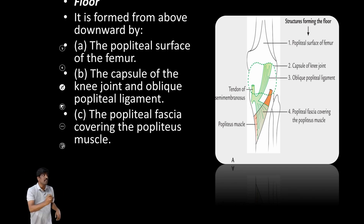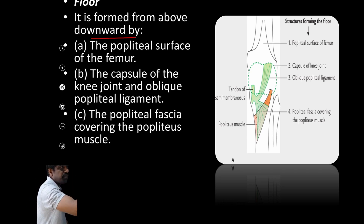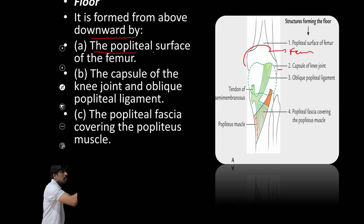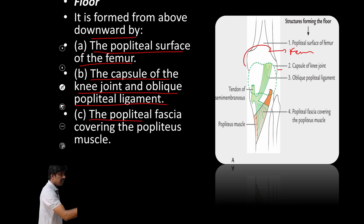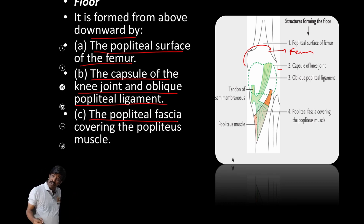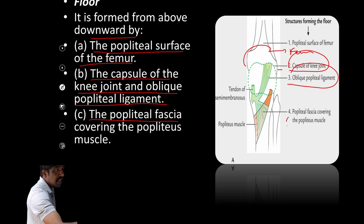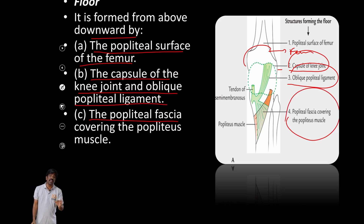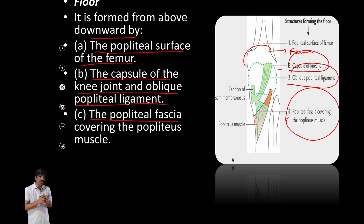The floor is formed by the popliteal surface of the femur, along with the capsule of the knee joint, the oblique popliteal ligament, and the popliteal fascia covering the popliteus muscle. You can see here the popliteal surface of the femur, the capsule of the knee joint, the oblique popliteal ligament, and the popliteal fascia — these form the floor of the popliteal fossa.